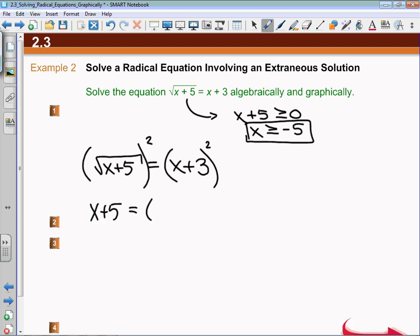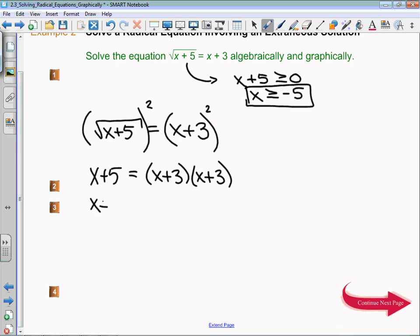That requires us to use the distribution property. What I get is that x plus 5 equals x squared plus 6x plus 9.